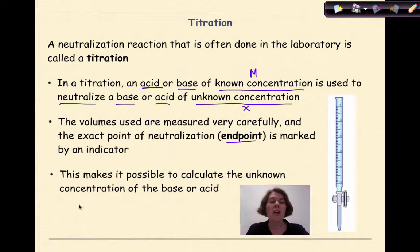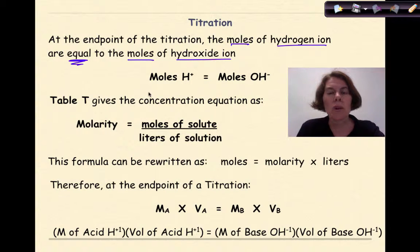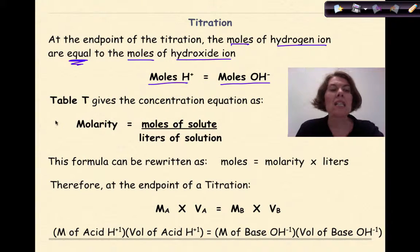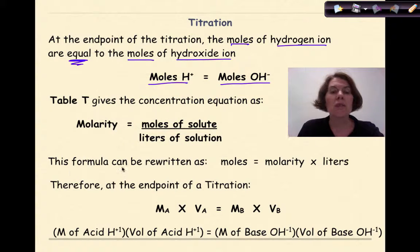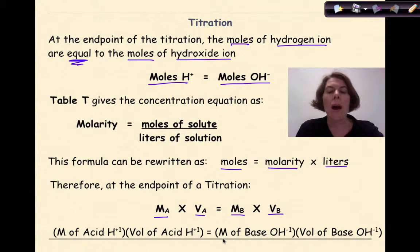This makes it possible to calculate the unknown concentration of the base or acid, or in some situations, an unknown volume. At the endpoint of the titration, the moles of the hydrogen ion are equal to the moles of the hydroxide ion. Table T gives the concentration equation: molarity equals moles of solute over liters of solution, which can be rewritten as moles equals molarity times liters. Therefore, at the endpoint: MA times VA equals MB times VB, where MA is molarity of the acid, VA is volume of the acid, MB is molarity of the base, and VB is volume of the base.